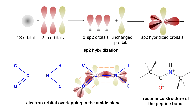But the pure p orbitals are involved in sp2 hybridization also overlap together to give rise to an effective phi bond. So you can see that a peptide bond is not really a sigma single bond — it also involves a phi bond. So a peptide bond is actually a double bond. Right?